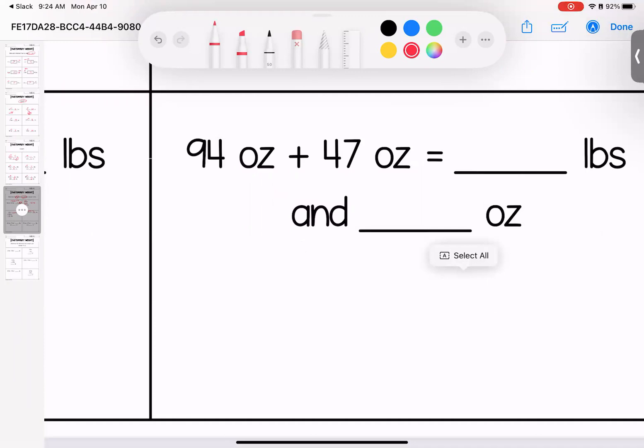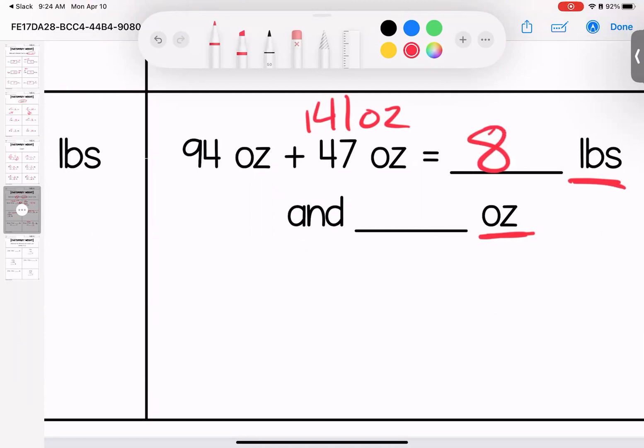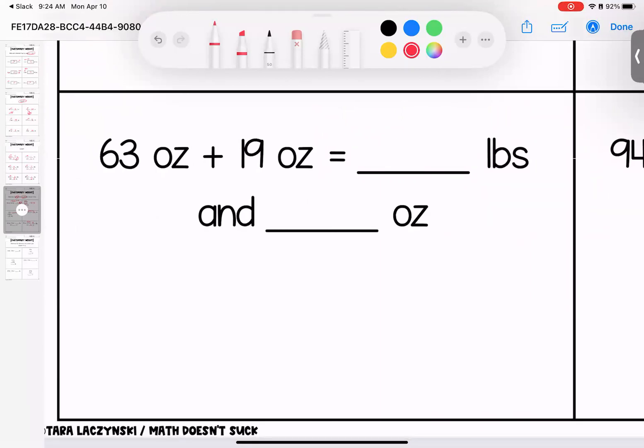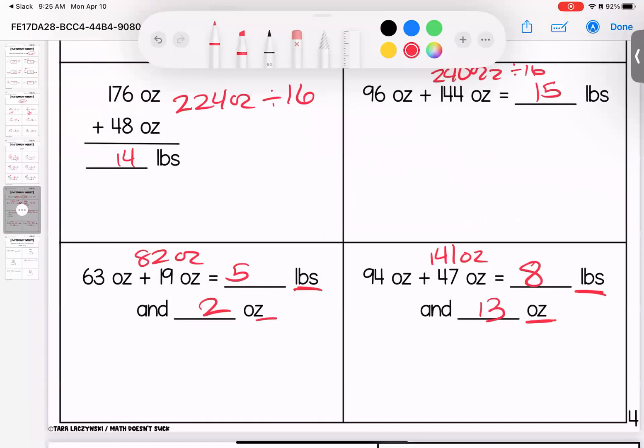Coming down here, 94 and 47 gives me 141 ounces. Notice that tells me I'm going to have a remainder. It goes in eight times, but not evenly. We know this because we see that remainder. We have a remainder of 13. Last one, 63 and 19 gives us 82 ounces. Again, I know that I'm going to have a remainder. It goes in five times. And when I figure out that leaves me with two ounces left over. Any questions on these, please bring them with you to class.